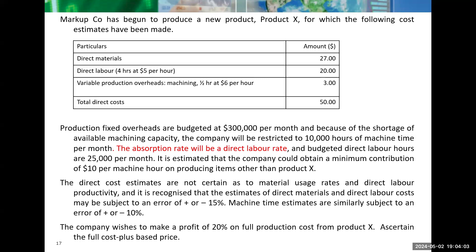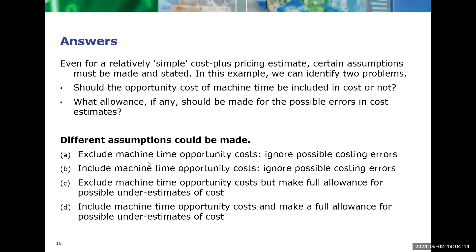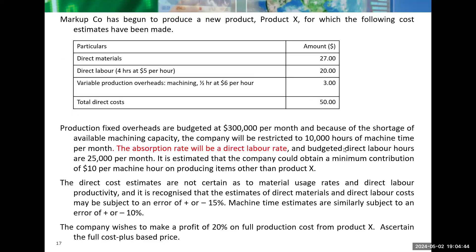The company wishes to make a profit of 20% on full production cost from Product X. Now determine the full cost-plus based price for this example. The beauty of this example is that many assumptions can be made here. Even for a relatively simple cost-plus pricing estimate, certain assumptions have to be made and stated. In this example we can identify two main problems: first, should the opportunity cost of the machine time be included in the cost or not? Because machine hours are limited, if you decide to produce any other product apart from X, the minimum contribution you can earn is $10.